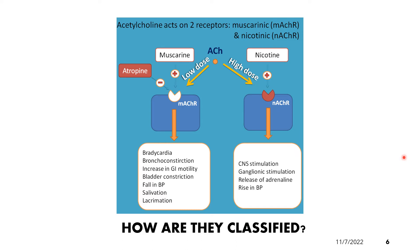These two receptors can also be further differentiated by specific antagonists, as indicated in the figure. Atropine is an example of an antagonist of the muscarinic receptor, blocking all muscarinic actions with no effect on the nicotinic action. Atropine is therefore considered to be an anti-muscarinic agent because it blocks the muscarinic receptors, reversing the effect of this receptor.